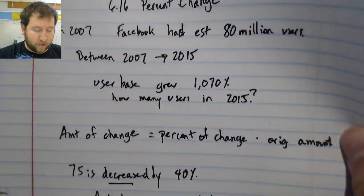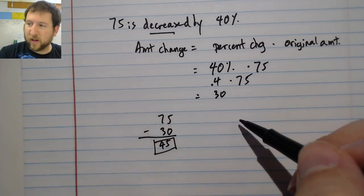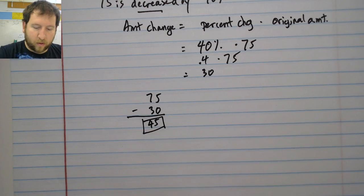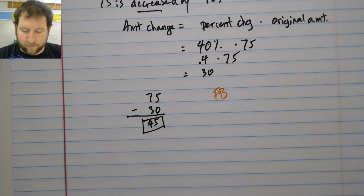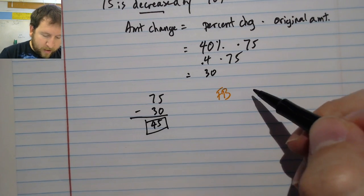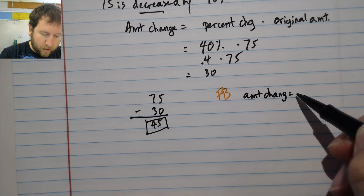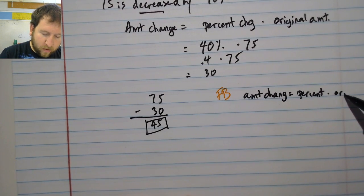Let's look again at solving this using the earlier problem where we looked at Facebook. Started with 80 million users. I'm going to write amount of change equals percent times original.